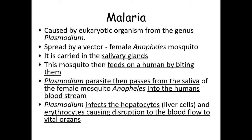Malaria — this is caused by a eukaryote organism called Plasmodium, which is a protoctist. It's spread by the vector, the female Anopheles mosquito. The Plasmodium is carried in her salivary glands, because as the mosquito feeds on a human by biting them, the Plasmodium passes into the next person's bloodstream. It infects the hepatocytes, which are liver cells, and other erythrocytes, causing disruption to blood flow to vital organs.